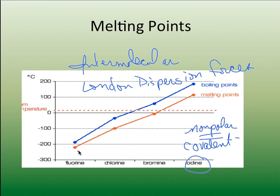This makes sense with the known states of these elements: fluorine and chlorine are gases at room temperature, bromine is a liquid at room temperature, and iodine is a solid at room temperature — its melting point is well above room temperature.